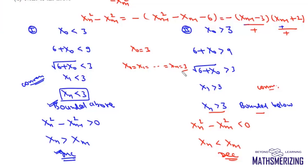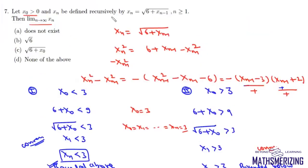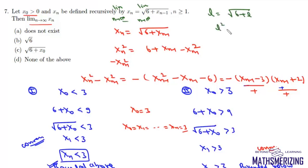Now we need to find the limit as n tends to infinity of xn. Taking the limit on both sides and supposing the limit equals L, we can write L equals the square root of six plus L, that is L squared minus L minus six equals zero. The value of L is either three or minus two.